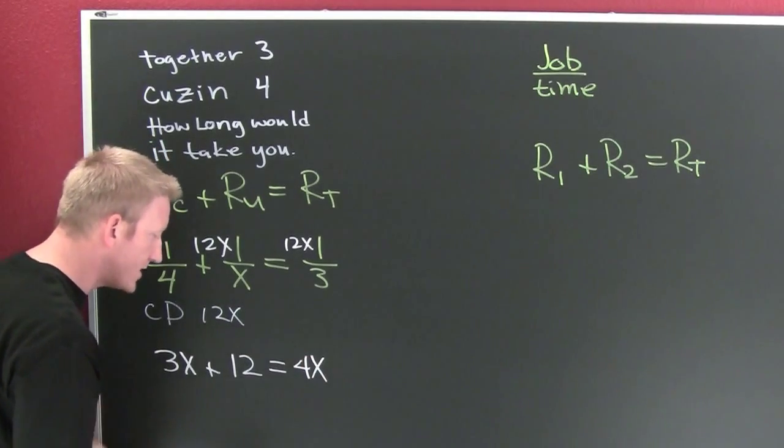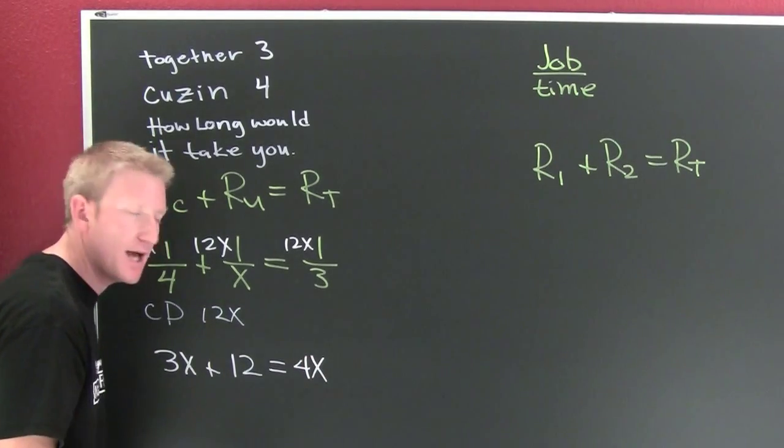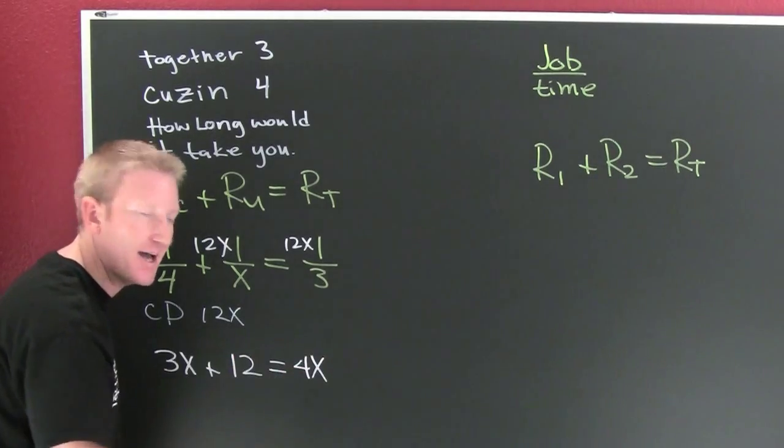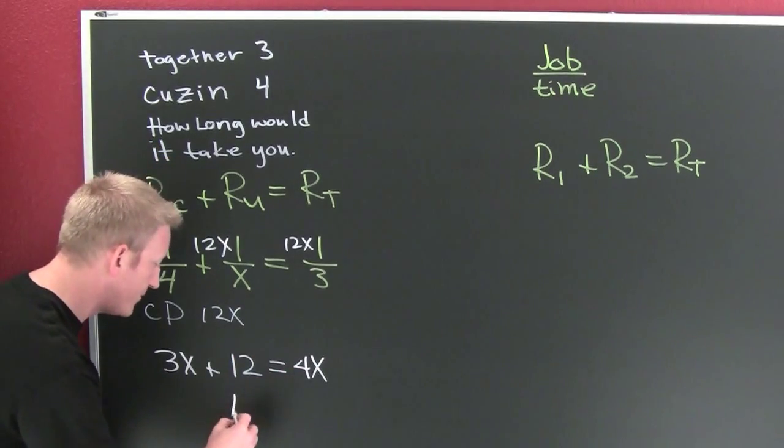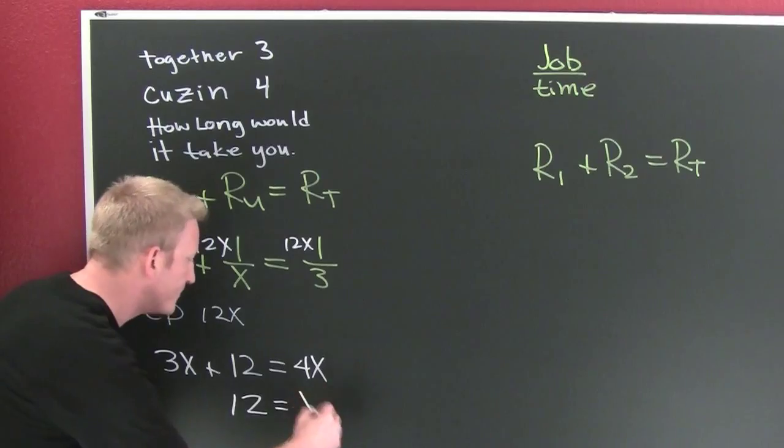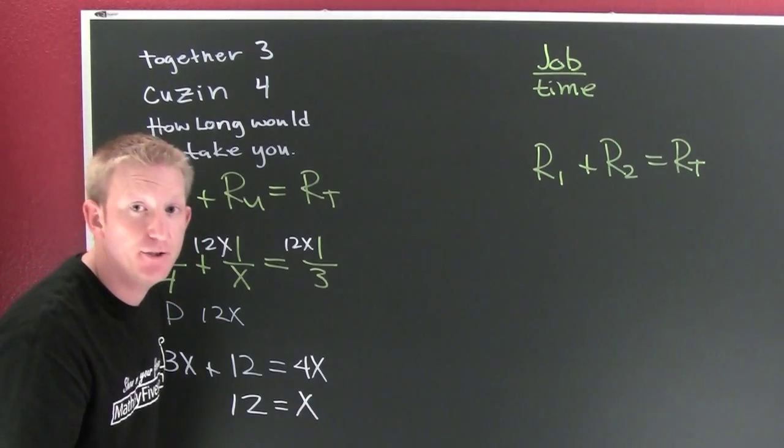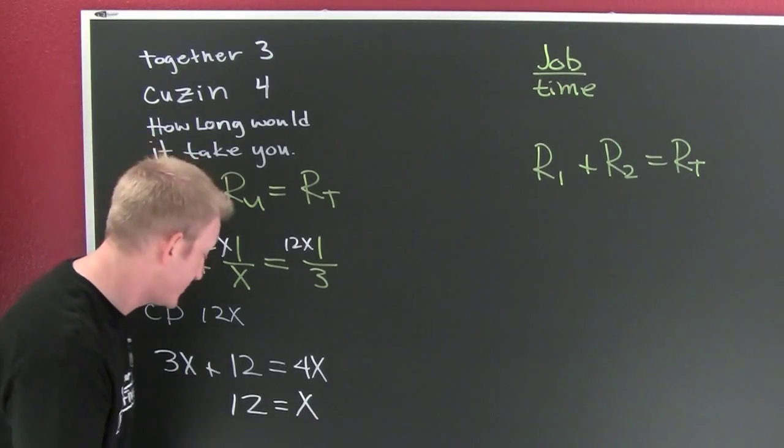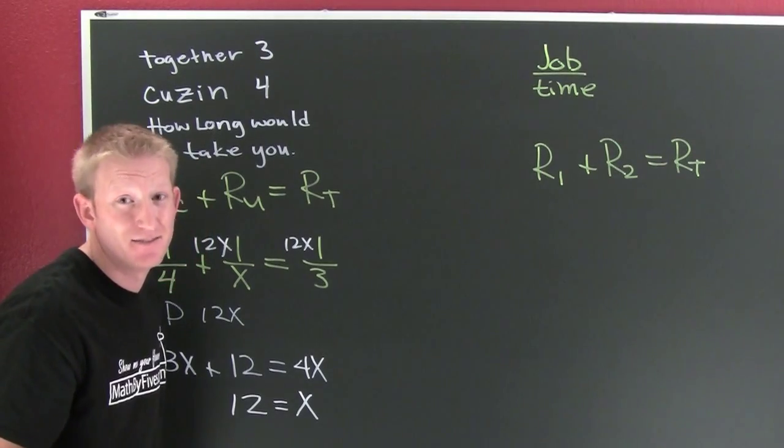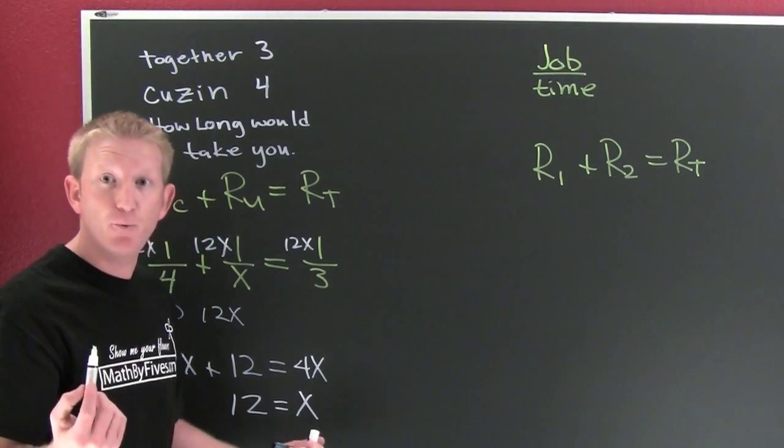Now I got X's on both sides. I want them on one side. Which side? Right siders. Positive people prevail. And it looks like it's going to take you 12 hours. Yeah, you were kind of slow. But hey, wait, I have another example.